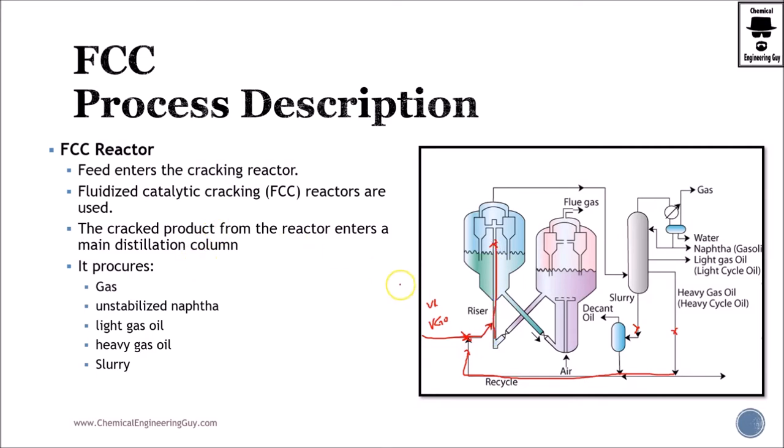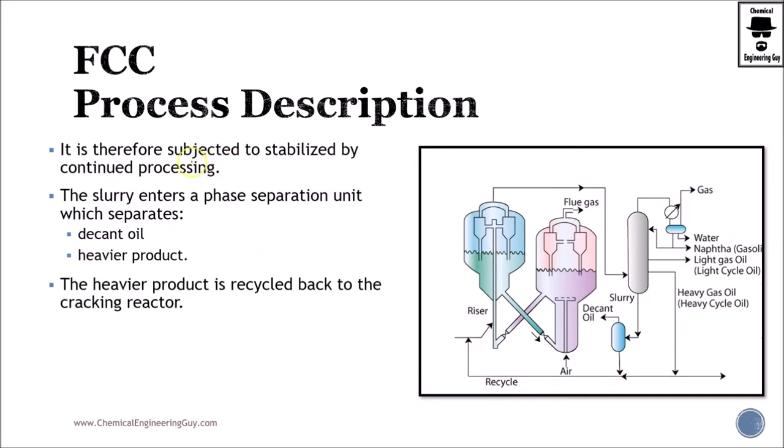There will be reaction and there will be cracked products. Mainly gases, unstabilized nafta, light and heavy gas oils and the leftover, which is the slurry. It is therefore subject to stability. So we want to recover our product and make it stable. So it is sent to this destination. Here we separate most of the products as gases, middle cut, heavy cut and the slurry.